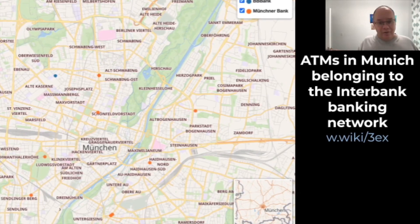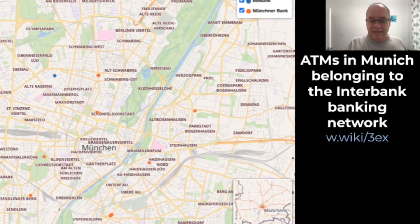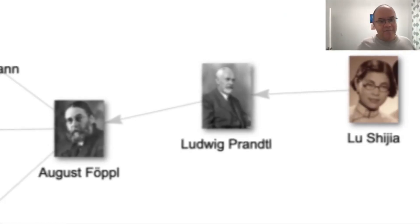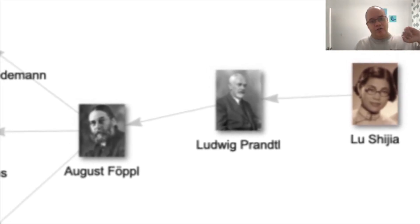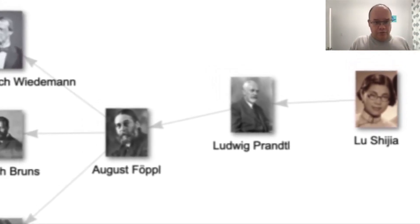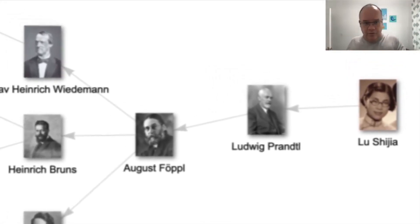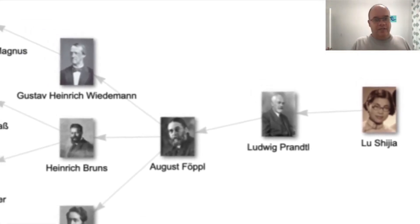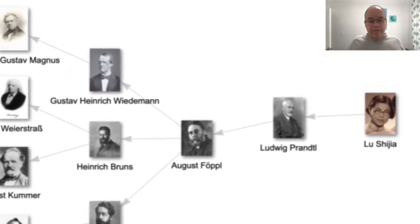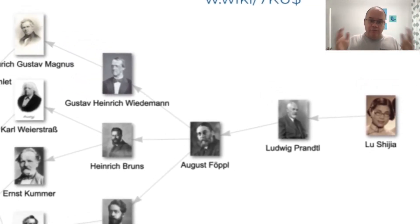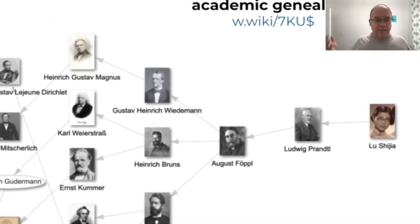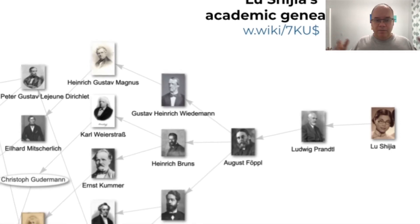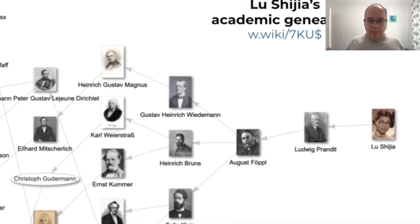Can you do that with the knowledge in your organization? Coming back to our example: here we see the academic genealogy of Lugia — her doctoral advisor, their doctoral advisor, and so on, back through the centuries. This is a fully interactive graph. The images come from Wikimedia Commons, the data from Wikidata, and most of these people you can read more about in Wikipedia.